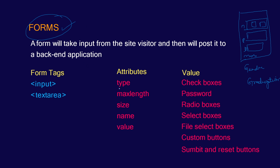In those fields, there are various types: checkboxes, password fields, radio boxes, select boxes, file select boxes, and custom buttons. At last, there will be one submit button and one reset button. These are the values you can use for fields present in a form, apart from text inputs. There are also certain attributes, which we are going to see in the later section of the video.